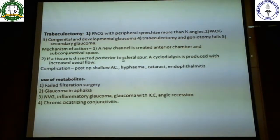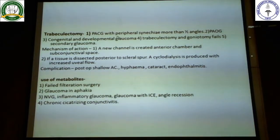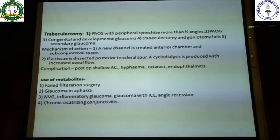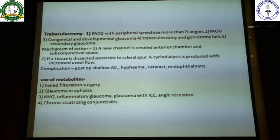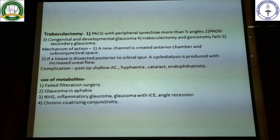Trabeculectomy can be done for most types of glaucoma: primary angle closure, primary open angle, congenital, developmental, and all secondary glaucomas. The mechanism is making a new connection between the anterior chamber through the trabecular ostium into the subconjunctival space. We will be showing surgical videos in a dedicated class covering cataract and trabeculectomy, but here I will briefly tell you how this surgery is done.